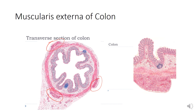The myenteric plexus of nerves lies between the inner circular and outer longitudinal layers. In this second histological section of the colon, you can well appreciate the inner circular and the outer longitudinal layer, which is arranged in the form of thin bands known as taenia coli.